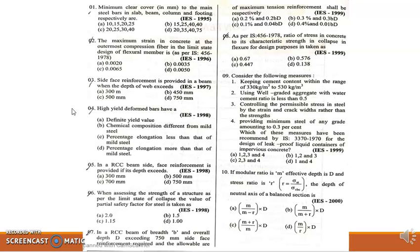Third question: Side face reinforcement is provided in a beam when the depth of beam exceeds. Options are 300mm, 450mm, 500mm, and 750mm. The correct option is option D, 750mm. Side face reinforcement is provided only when the depth of beam exceeds 750mm.